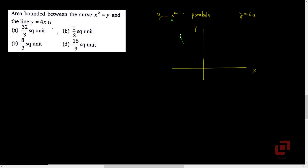The line y equal to 4x passes through the origin and has a positive slope, making an acute angle with the x-axis. The required area is the region bounded by the straight line y equal to 4x above and by the parabola y equal to x squared below. Let us find the coordinates of the point where the parabola and the straight line intersect.